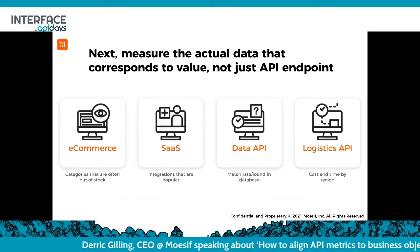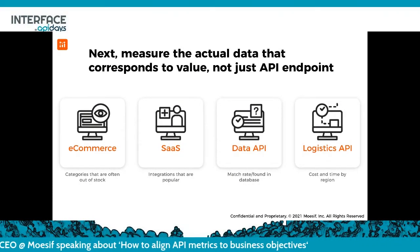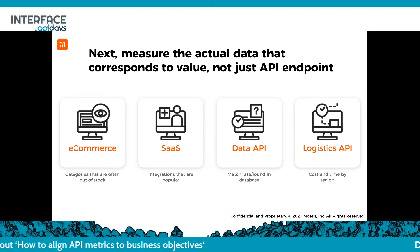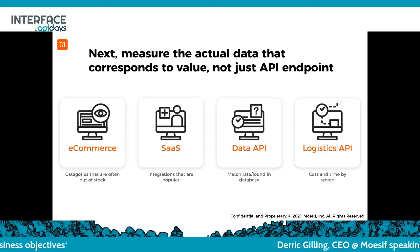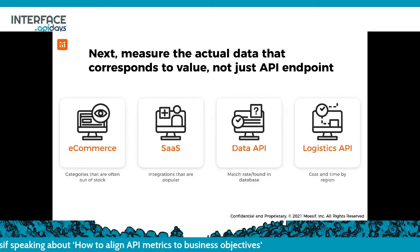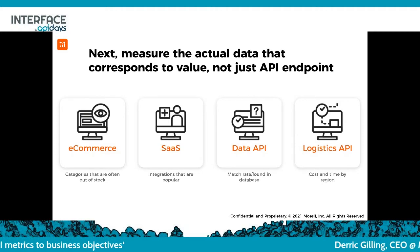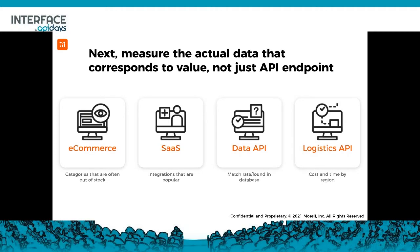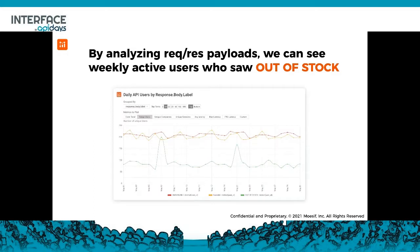Just because they're using your API doesn't necessarily correspond to value. We actually want to understand what they're getting out of it. Going back to the e-commerce platform example, we might look at categories that are out of stock versus always 100% in stock. Similarly for a data API, going back to that match rate — is it 100% or 50%? The way to do this is by looking at the payloads traveling over your API. Now we can build out a full chart showing the number of daily or weekly active users who see a query result that is unavailable, available, or out of stock — very relevant for an e-commerce platform. This is a much better way to look at engagement than just requests per second.